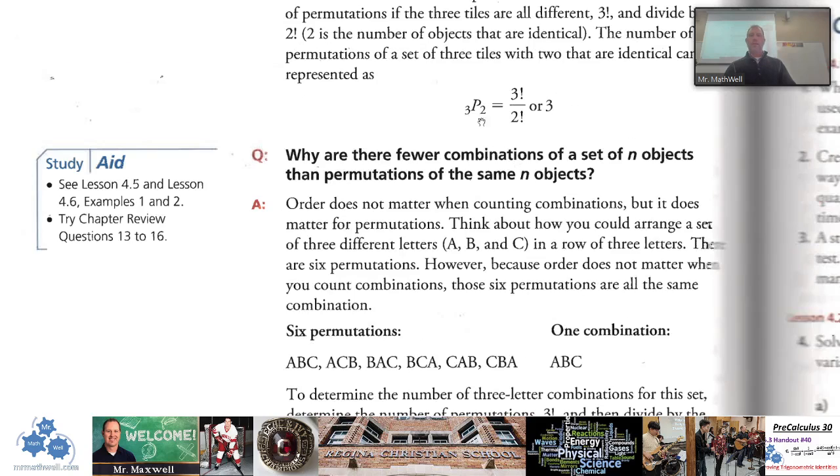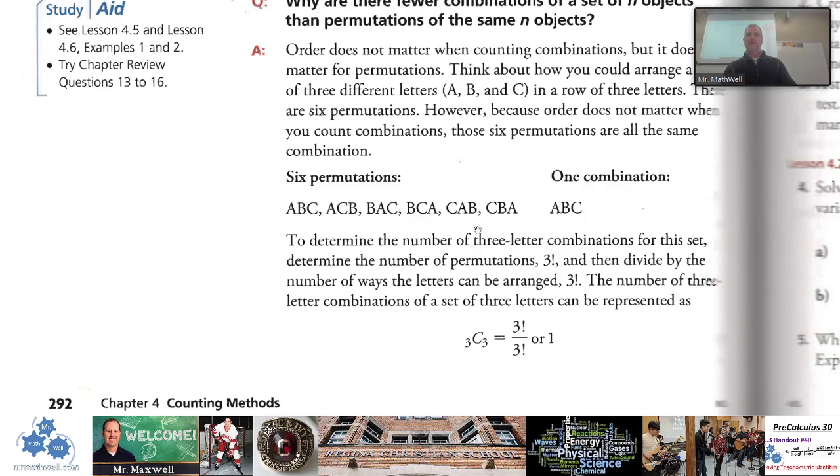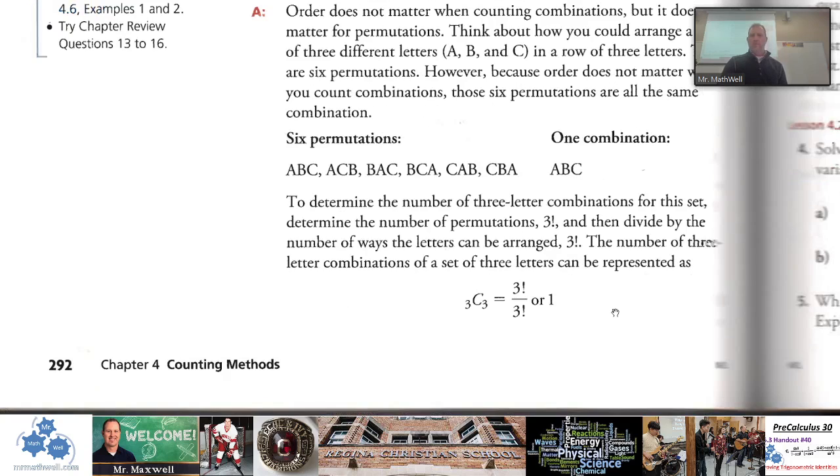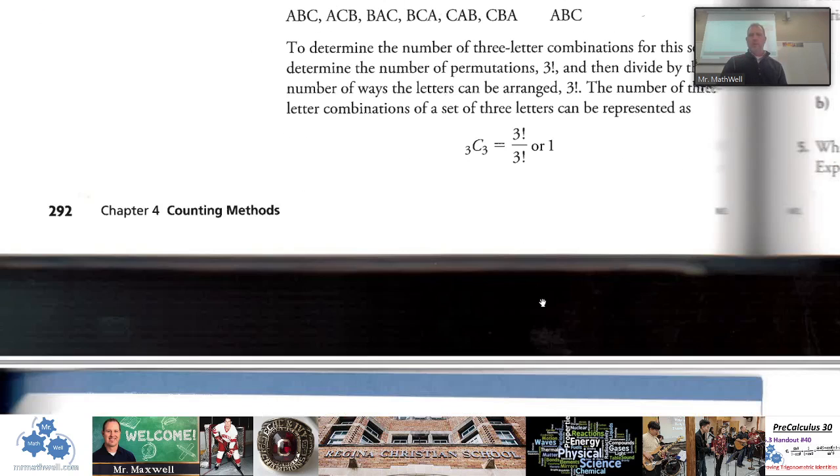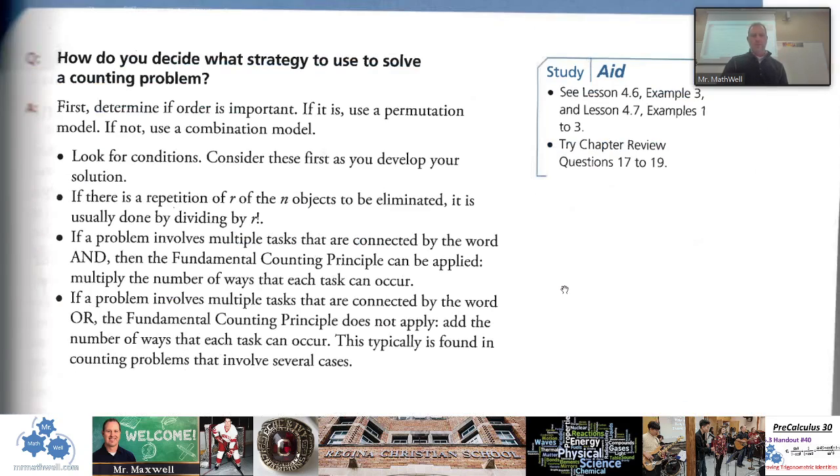So you will notice that there's a permutation notation right, three pick two. 'Pick' is the word that I use there, so if you see P that means pick arrangements—you pick them and you place them in order. And C is combinations, I use the word 'choose,' so we're just choosing random students or choosing random objects. The order doesn't matter.